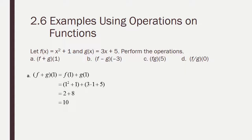So for a, we take f of 1 and add g of 1. f of 1 is 1 squared plus 1, which is 2. g of 1 is 3 times 1 plus 5, which is 8. 2 plus 8 is 10.